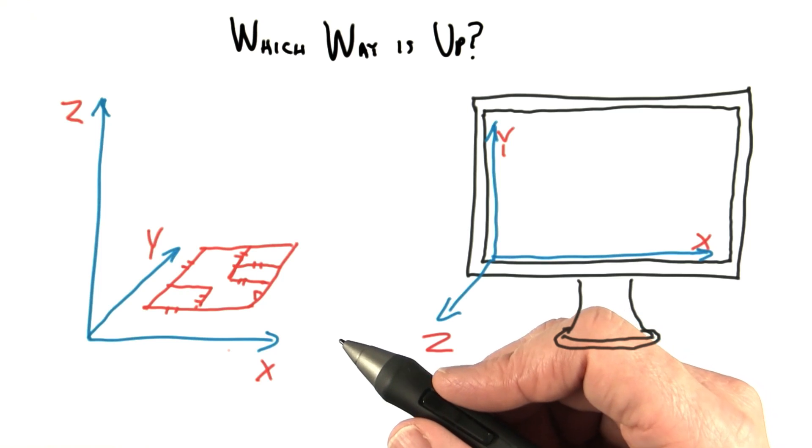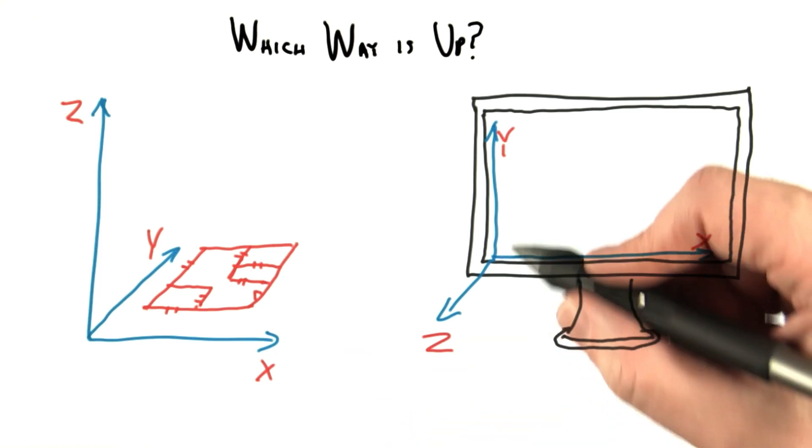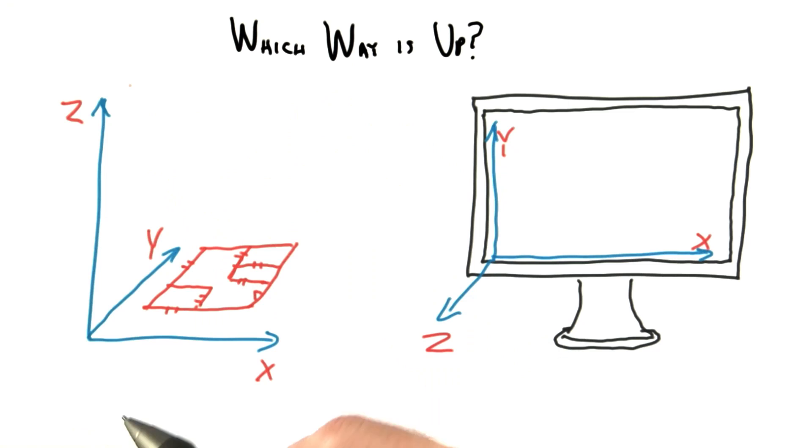One other area in computer graphics where opinions vary is whether the y-axis or the z-axis should be in the up direction.